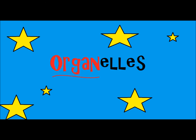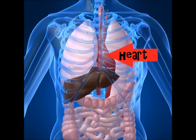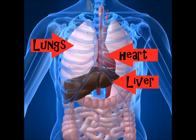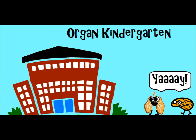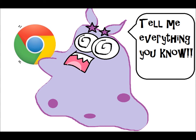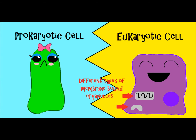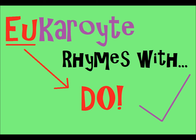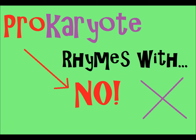I like to think of the word organelle like the word organ — you know how you have organs in your body, like a heart, liver, and lungs? Well, organelles are kind of like little organs. Eukaryotes have these membrane-bound organelles, and there's a whole list of them you can find online. But prokaryotes do not have membrane-bound organelles. One way to remember: eukaryote — the 'U' rhymes with 'do,' they do have membrane-bound organelles. Prokaryote — the 'pro' rhymes with 'no,' and they do not have membrane-bound organelles.